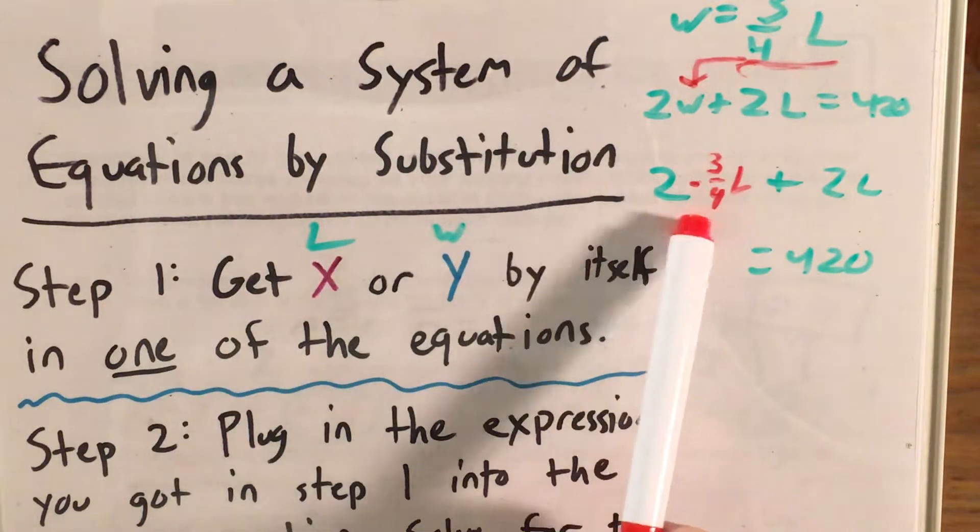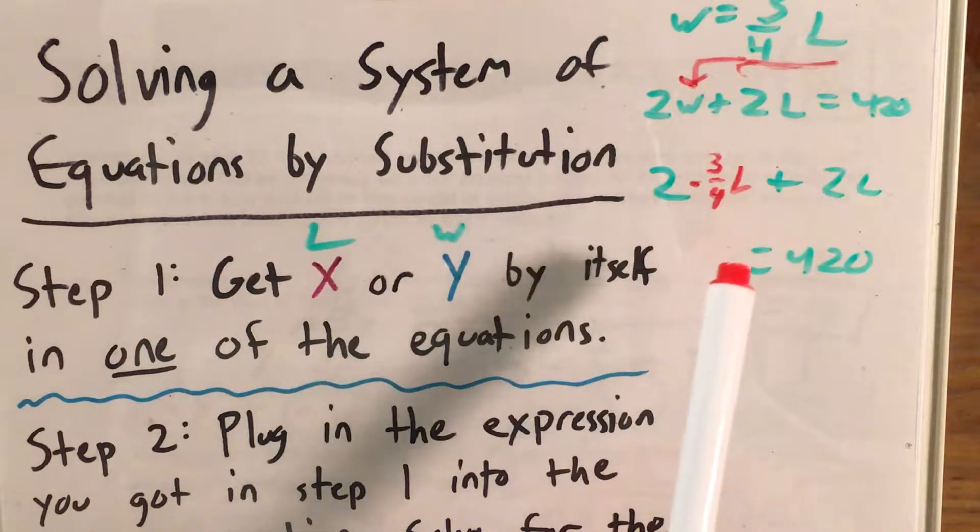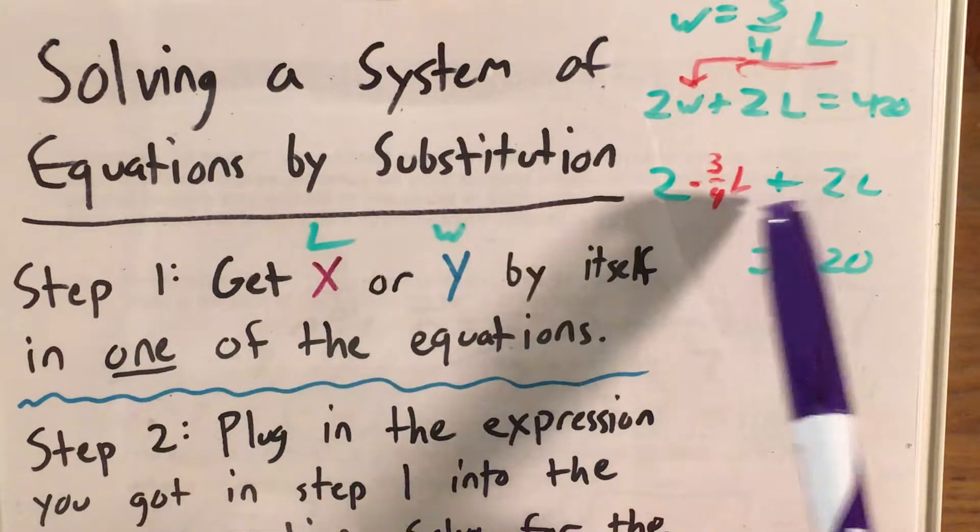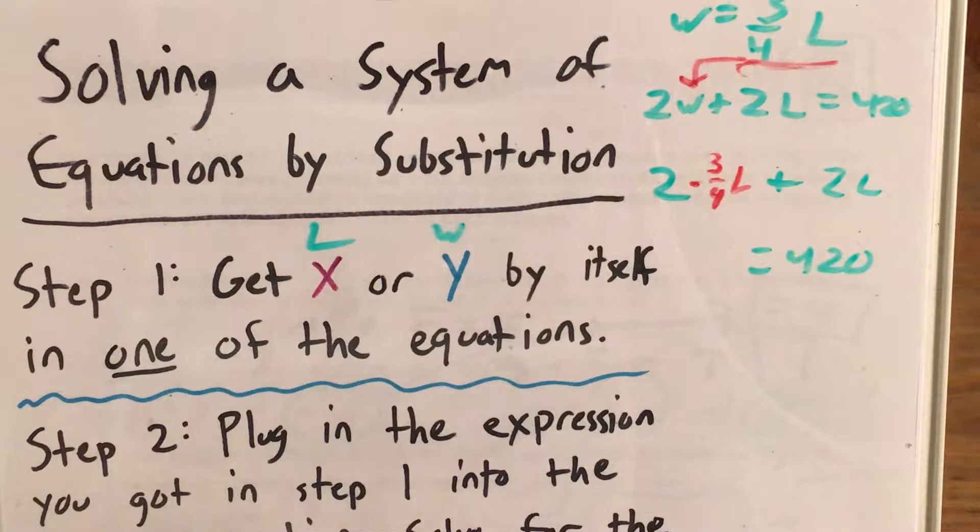So if we know that the width is three-fourths of the length, it makes sense to say this in a different way, or as another way of saying that two widths plus two lengths equals 420, except now we're only dealing with one variable that we don't know yet in this equation. So this makes it a lot easier.